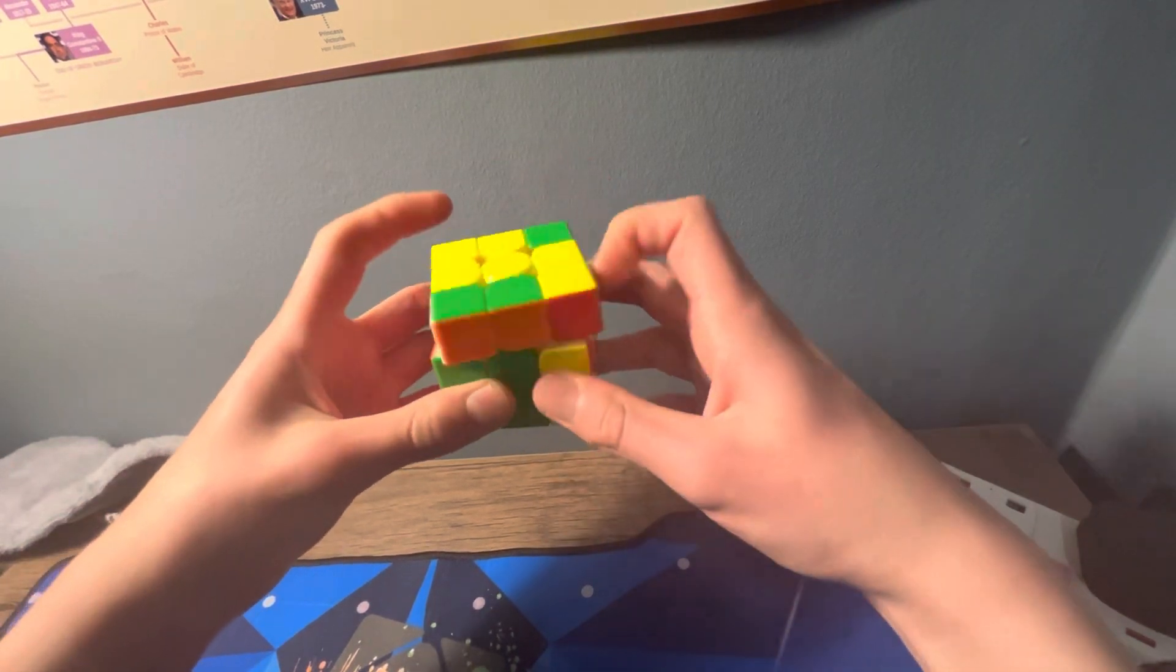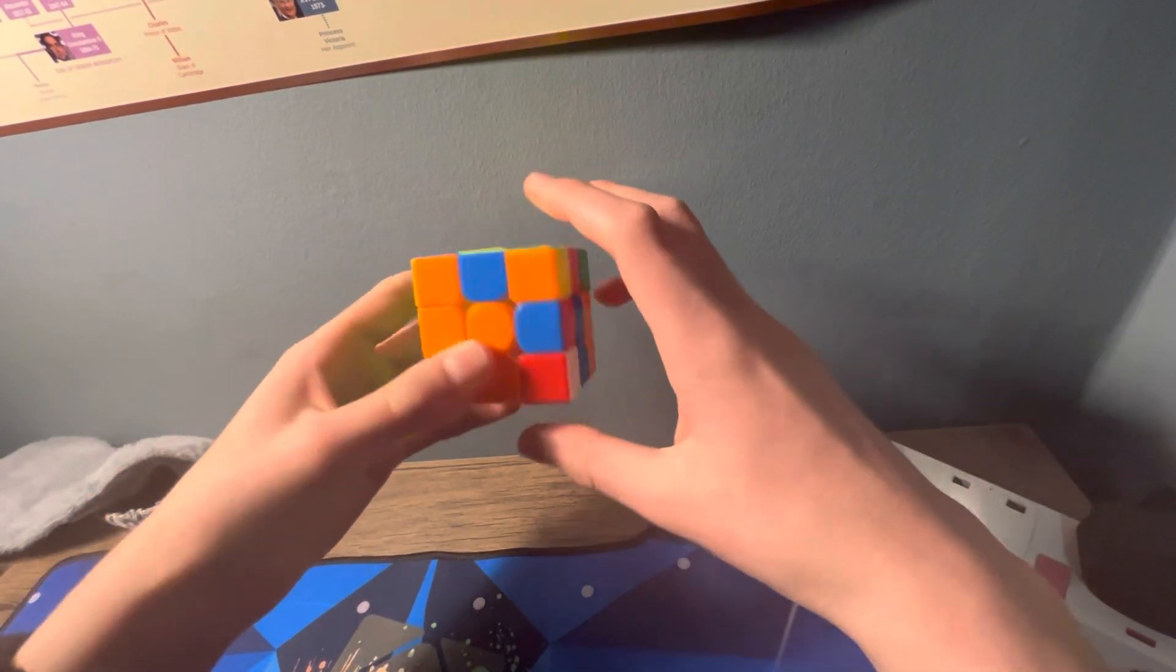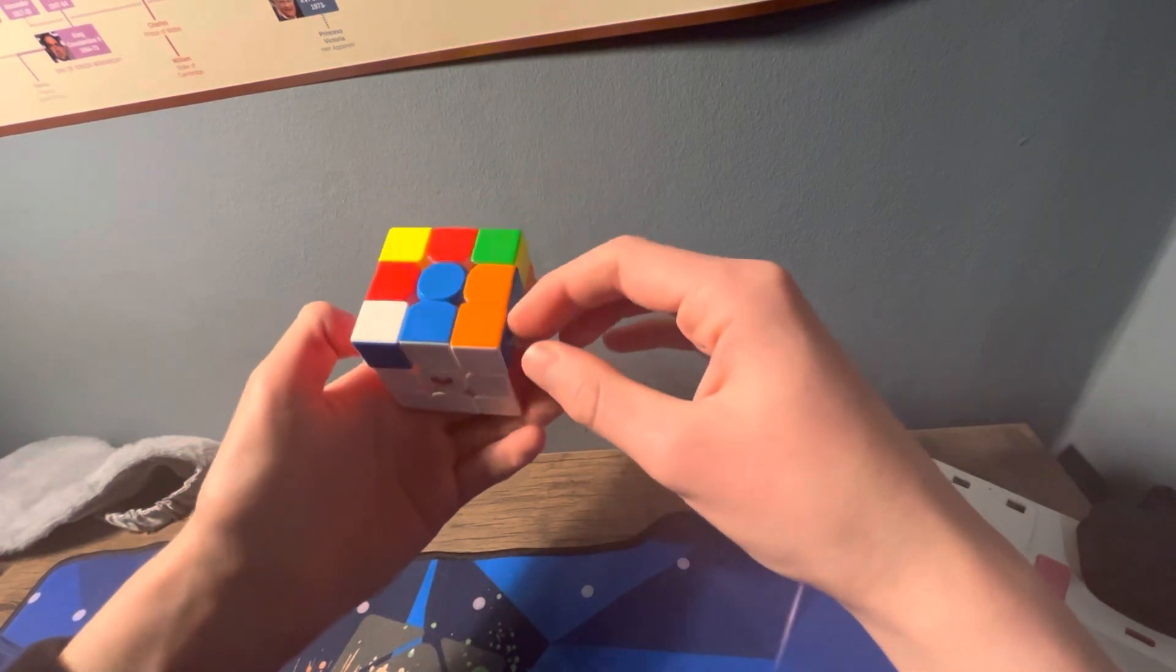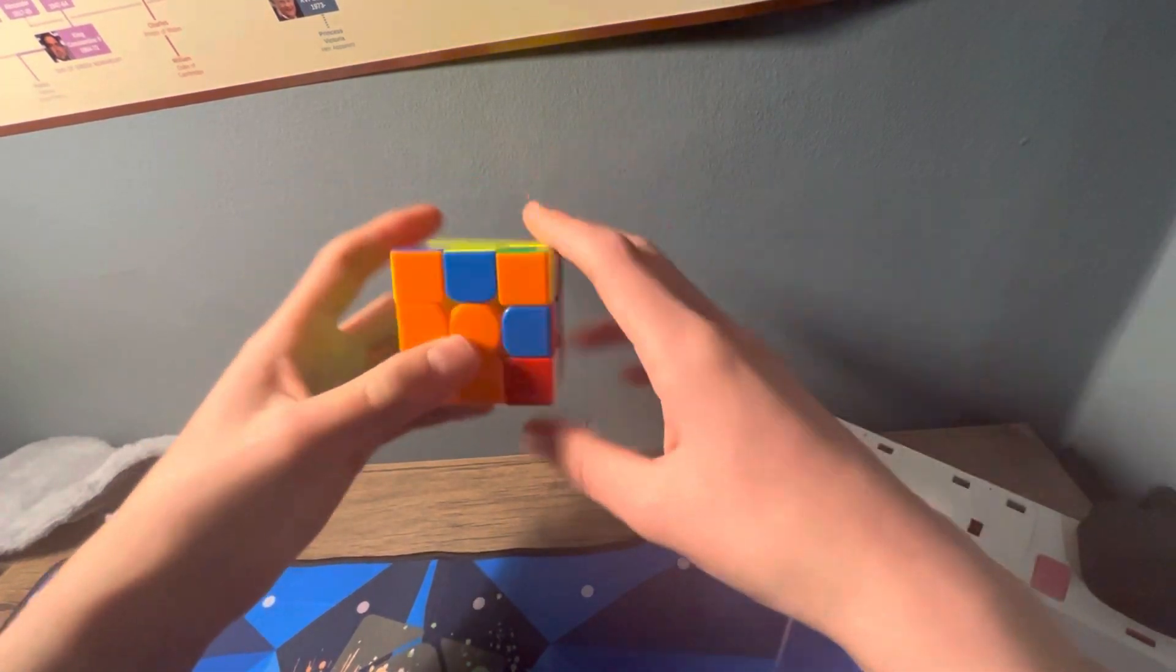Then I see this orange green, which I can do some cheeky F2L stuff to insert like that. Then I didn't see this blue orange. If I did, I probably would have gone for it, but it's good I didn't because it all works out in the end.